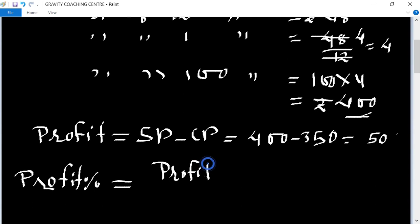So profit is 50 rupees and cost price is 350, so 50 upon 350 multiply 100.